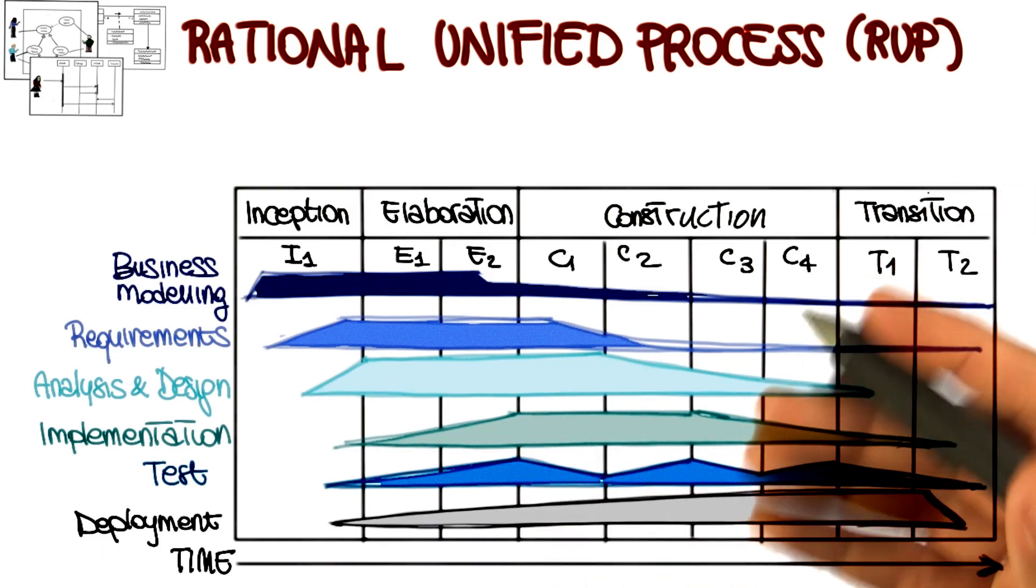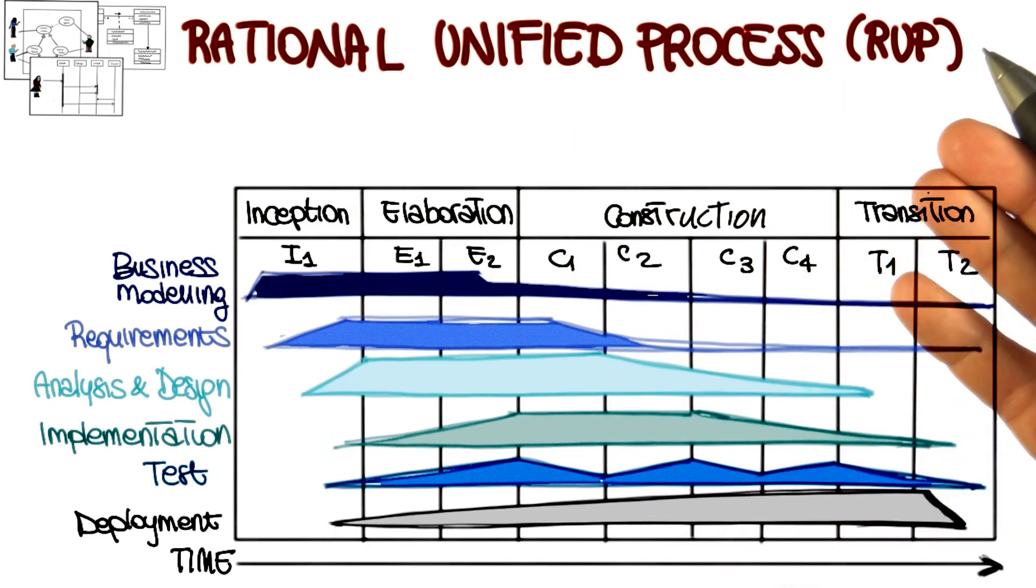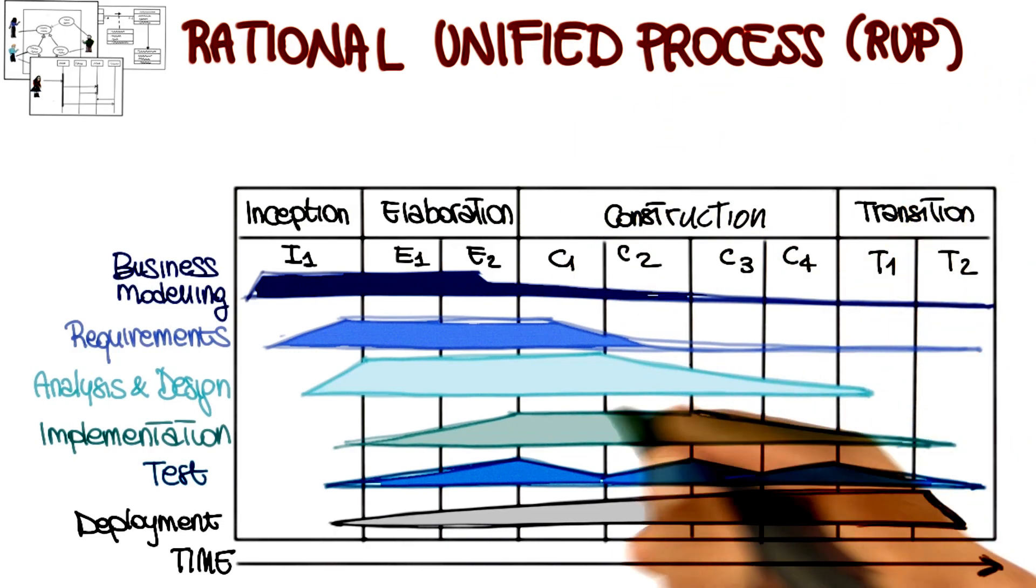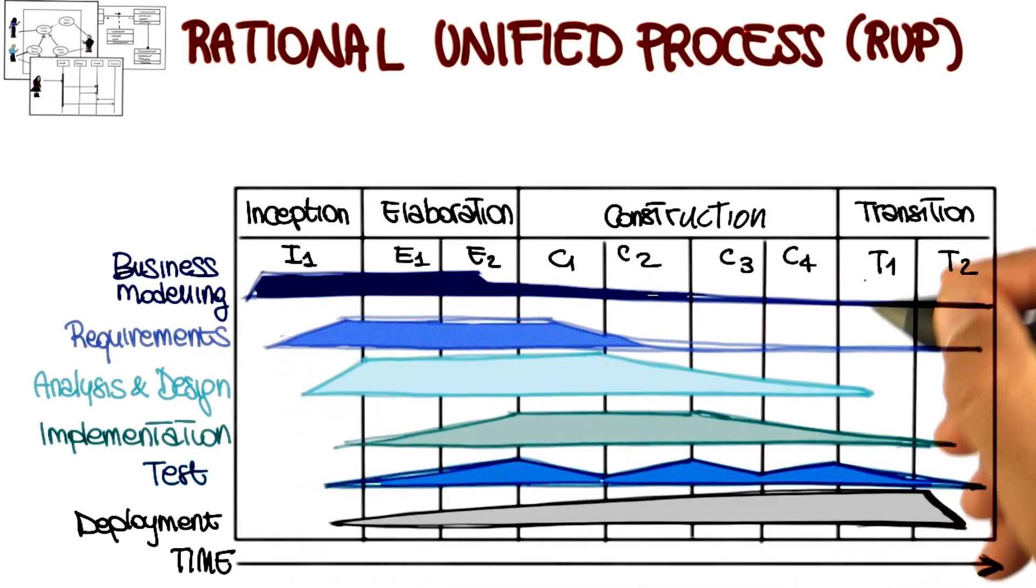And finally, the transition phase is the phase in which the system goes from development into production, so that it becomes available to users. And of course, this is the phase in which the other activities in software development become less relevant and deployment becomes the main one.